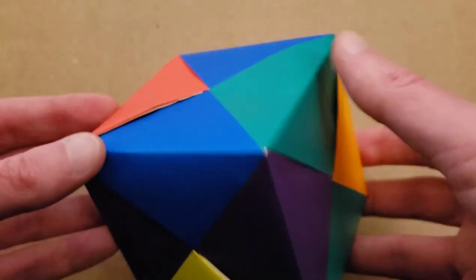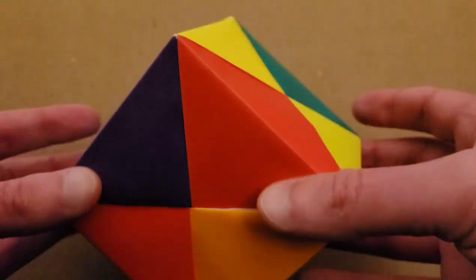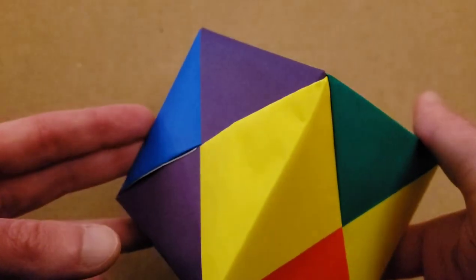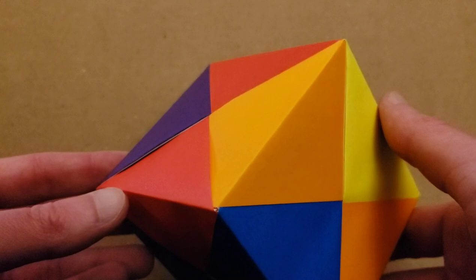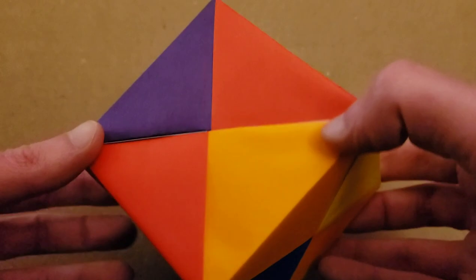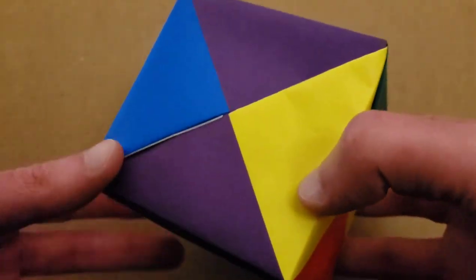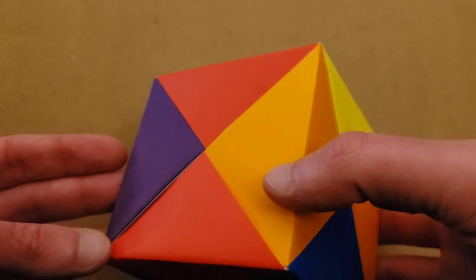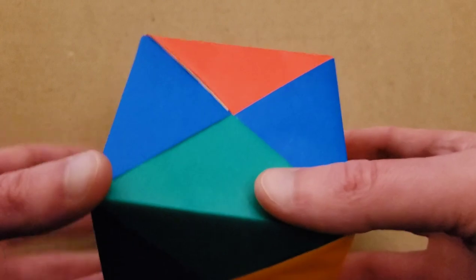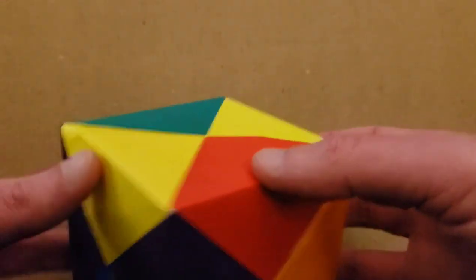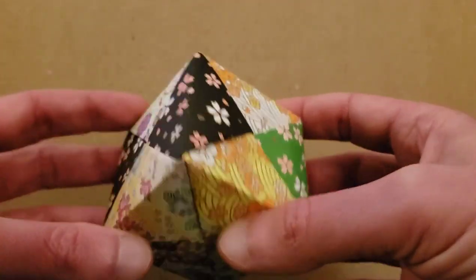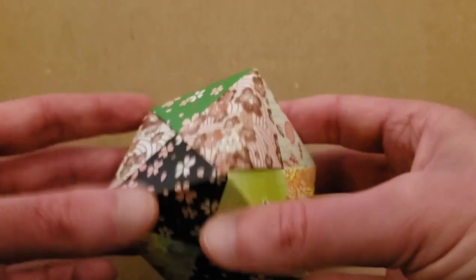And today we're going to be making a project that I used to make all the time when I was a kid. It is the modular cube. I absolutely love these. They're actually surprisingly easy once you get the gist of what you're doing. And it will take six sheets of square paper, all of course the same size, and you can use different colors. It could all be the same color, two-toned, what have you, and you can get schmancy with your paper choices and create something really quite beautiful.